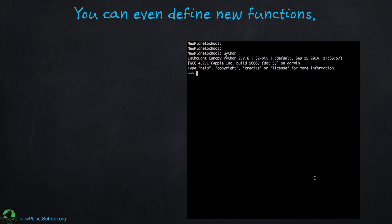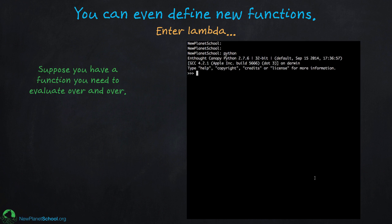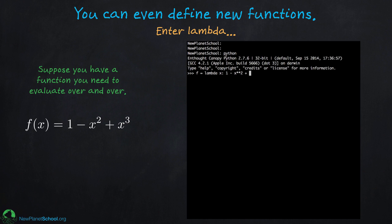Now let's move on to defining our own new functions using something in Python called lambda. Suppose you have a function to evaluate over and over — maybe a trigonometric function or polynomial for a homework problem. You use lambda to define a function in terms of a variable in one line, then use it repeatedly. For example: `f = lambda x: [polynomial]`, where `**` means raised to the power. Then you can simply ask for any value of that function. You can even define a variable and pass it to the function.